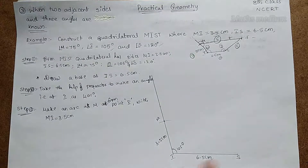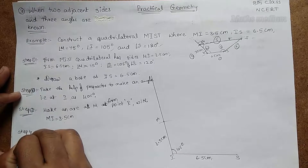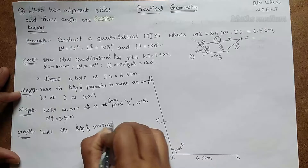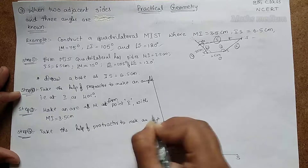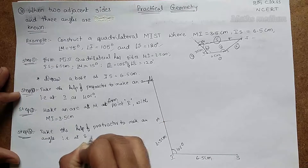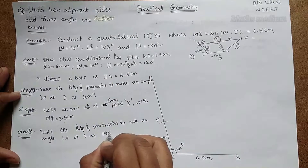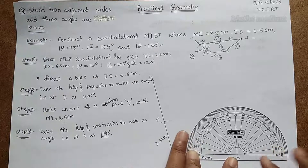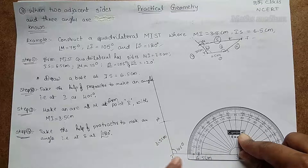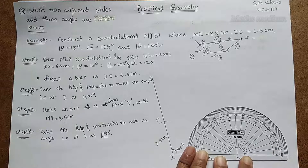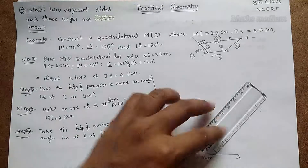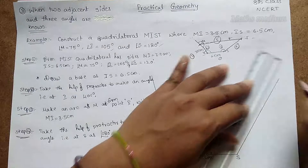Step 4: angle S is equal to 120 degrees. Take the help of a protractor and put the middle point at S, making sure the line is parallel to the base. Measure 120 degrees, put a point there, and connect the two points to draw the line from S at 120 degrees.